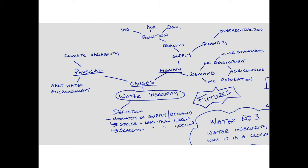What are the causes of this? It very much links back to enquiry questions one and two, particularly climate variability and changes to the global atmospheric circulation. One cause is saltwater encroachment, which can be physical but also linked to human activity — where there is over-abstraction, saltwater can fill aquifers. Additionally, as sea levels rise due to climate change, saltwater gets into water tables.